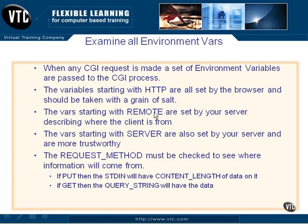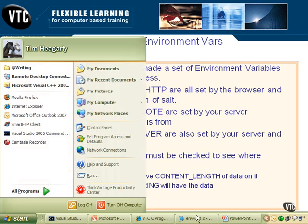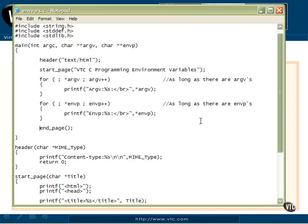There will be a REQUEST_METHOD variable and that must be checked to see where the rest of the information will come from. If the request method is a POST, then standard in will have a CONTENT_LENGTH of data on it — the CONTENT_LENGTH variable will show up and say how long the incoming information is. If it's a GET, then the QUERY_STRING will have the data. We've already seen GET and QUERY_STRING and how to use it. So let's go take a look at a program called envvars.c.